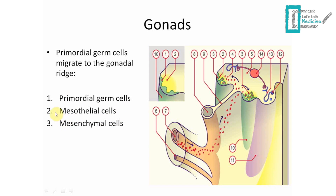The mesothelial cells will give us the structures that harbor and help in the development of the primordial germ cells — in males that's the seminiferous tubules, and in females the ovarian follicles. The last kind of cells are the mesenchymal cells; these are supporting cells. In males they give us Leydig cells, and in females they give us the ovarian support stroma.